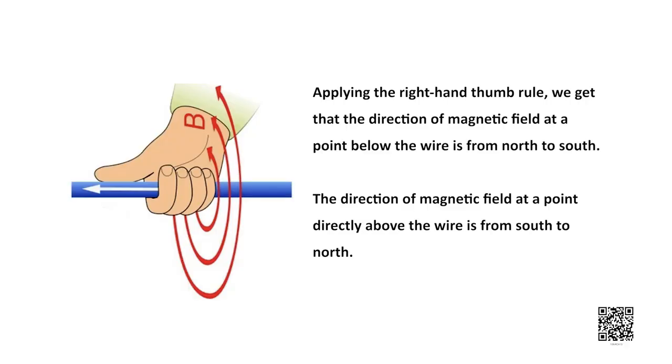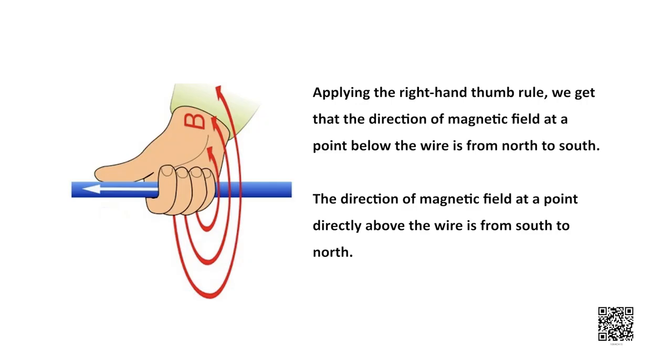Assume that the current flowing through a horizontal power line flows in the east to west direction. What is the direction of magnetic field at a point directly below it and at a point directly above it? Applying the right hand thumb rule, the direction of magnetic field at a point below the wire is from north to south, and the direction of magnetic field at a point directly above the wire is from south to north.